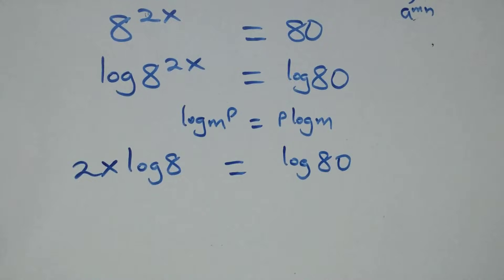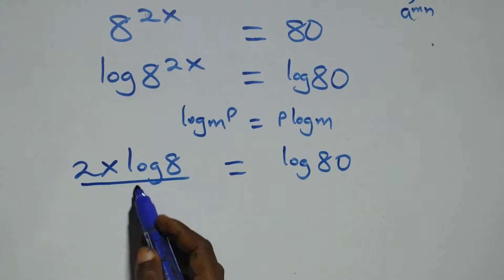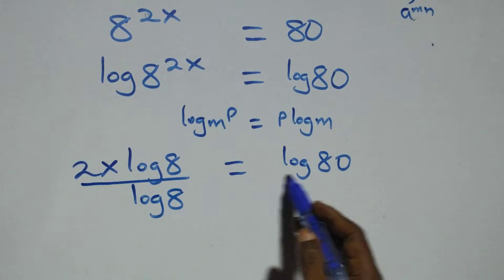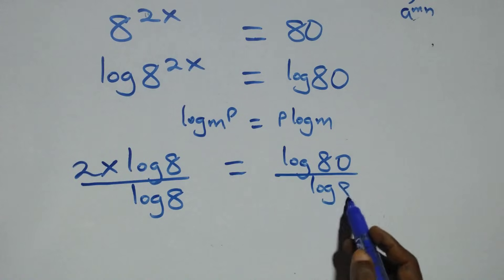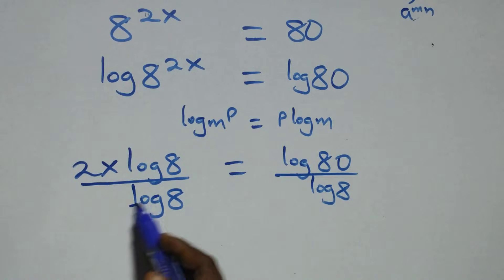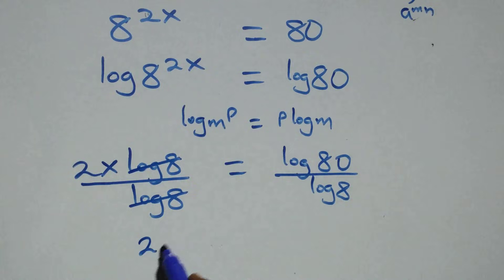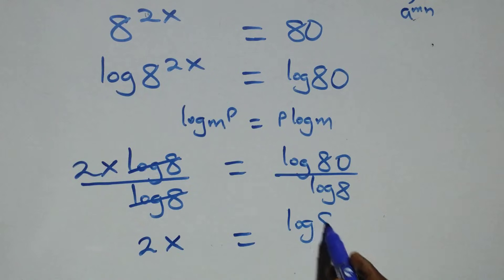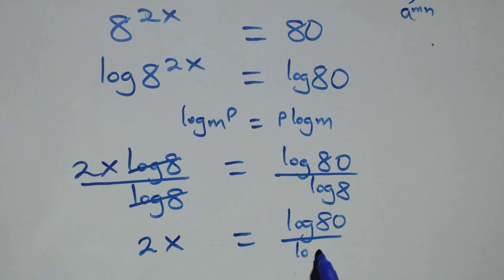Then from here we divide both sides by log 8 — divide this side by log 8, also divide this side by log 8 — which implies that log 8 cancels each other, and we have 2x equals to log 80 over log 8.